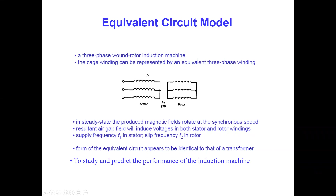As you can see here, we have a stator and we have a rotor. There is no electrical connection between the stator and the rotor — these two circuits are separated by an air gap, but they are linked by the magnetic field. In steady state, the rotating magnetic field (RMF) rotates at the synchronous speed, which can be calculated using: Ns = 120 × f / P.